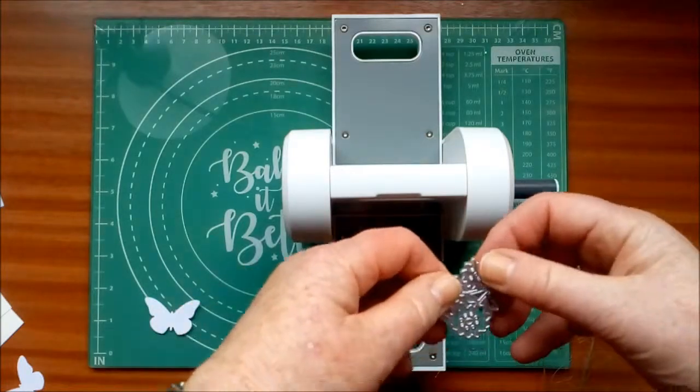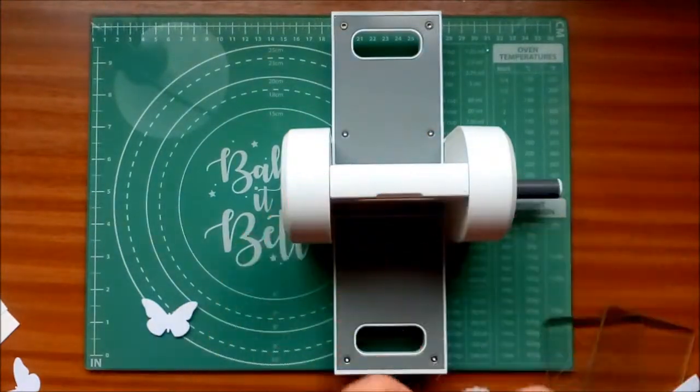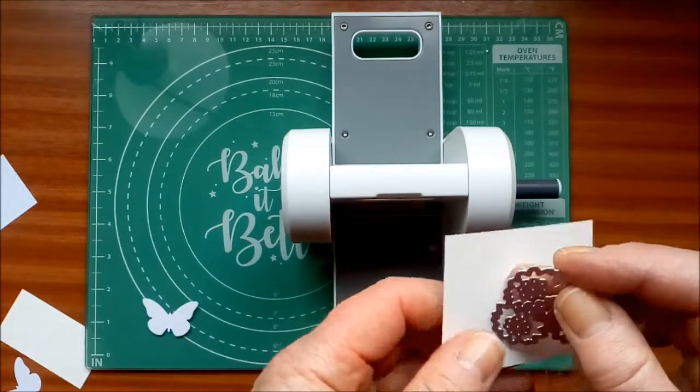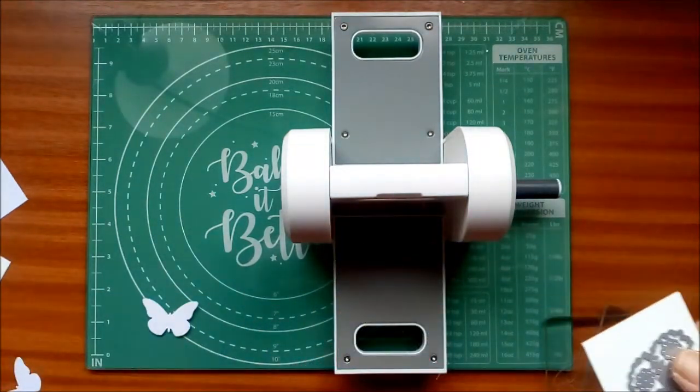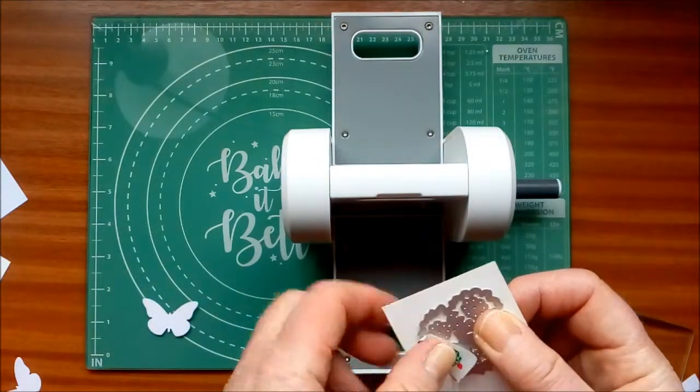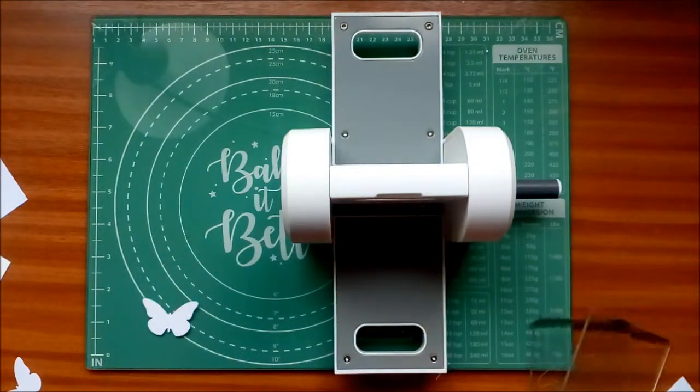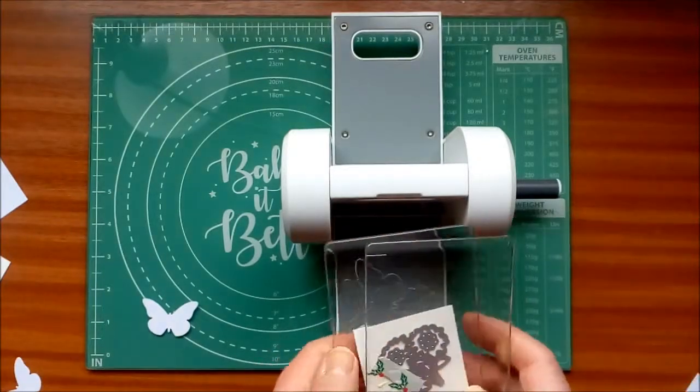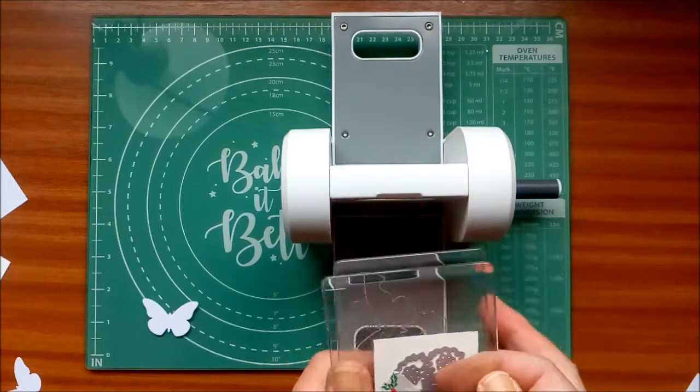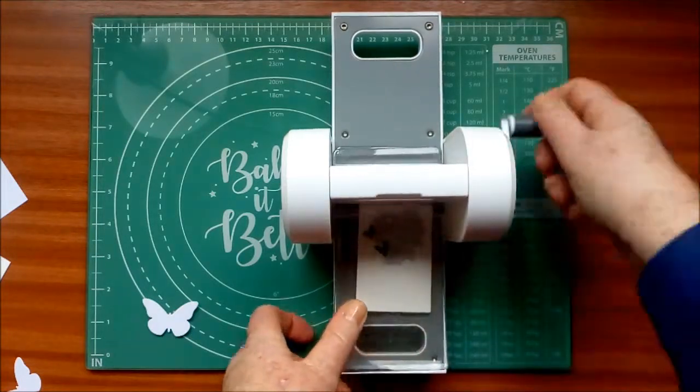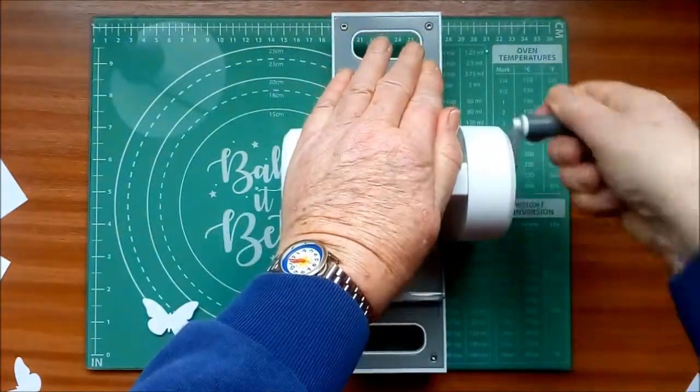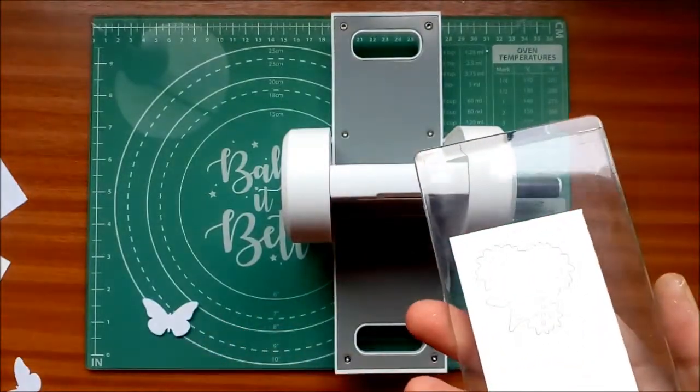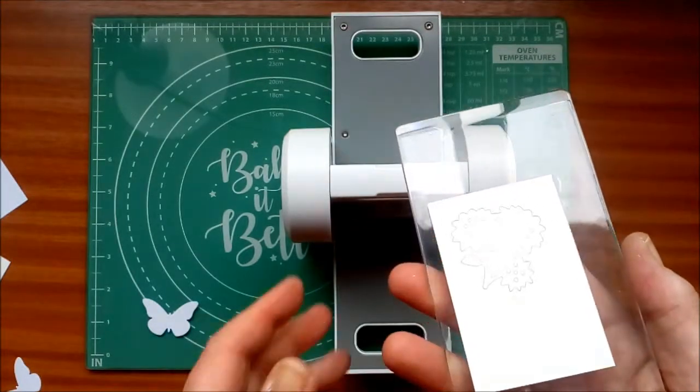Using a more intricate die, this one's a bit of a challenge. I'm going to tape my die to the card. You'll see why. So running it through in normal mode. Bit of a click, but it hasn't cut cleanly through the die.